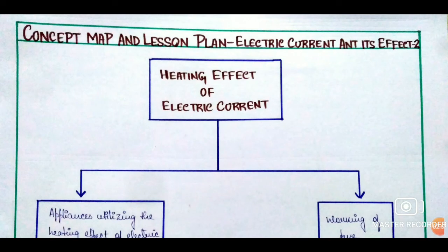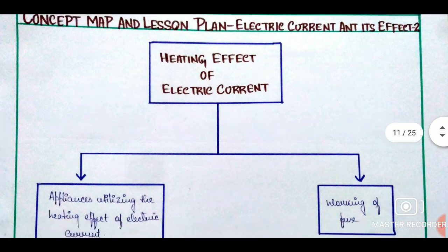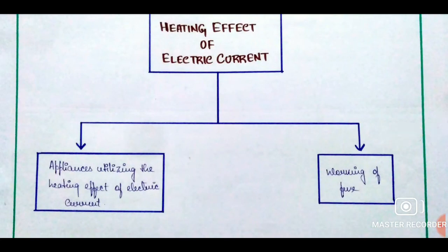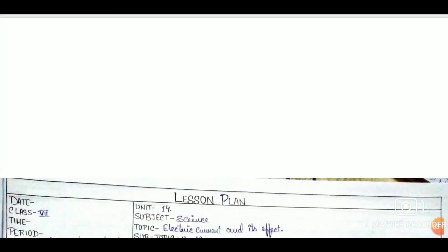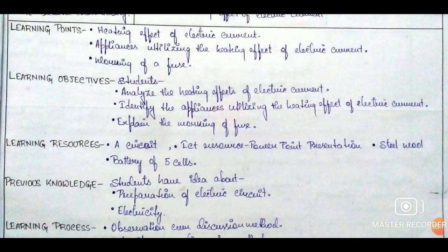The first lesson plan is over with a proper home assignment. We are now here with the second lesson plan from the same chapter, electric current and its effects. Here is the concept map. We are going to talk about the first effect of electric current — the heating effect. The concept map ends and we begin writing the details like date, class, time, period, unit, subject, topic, and subtopic, before moving on to our learning points.